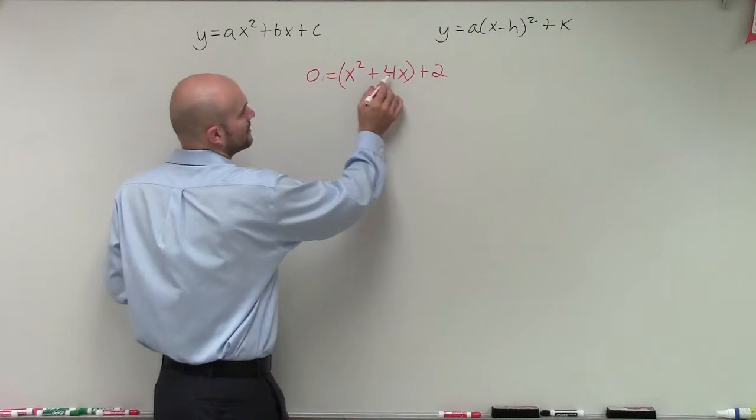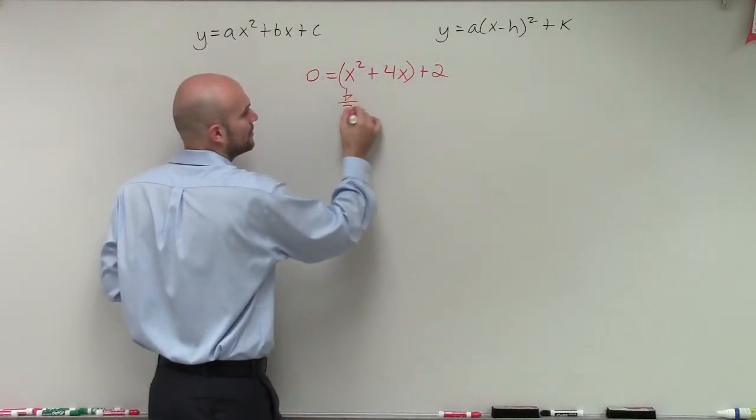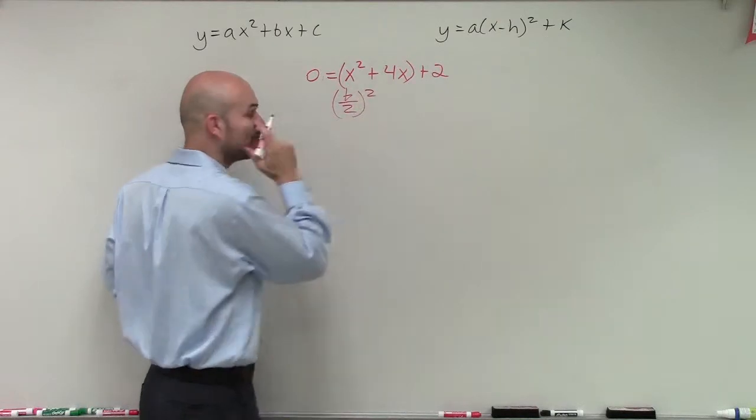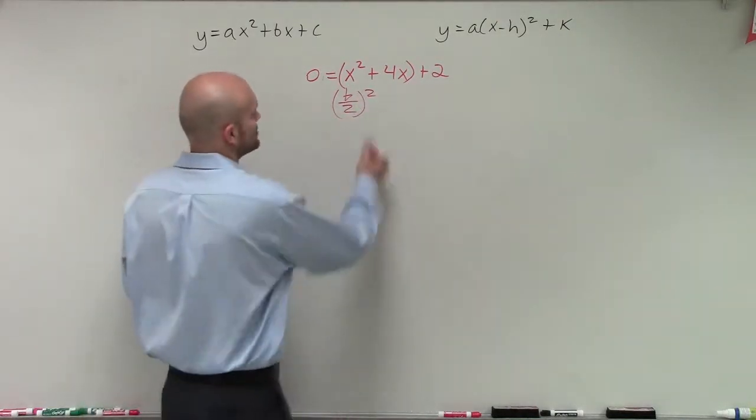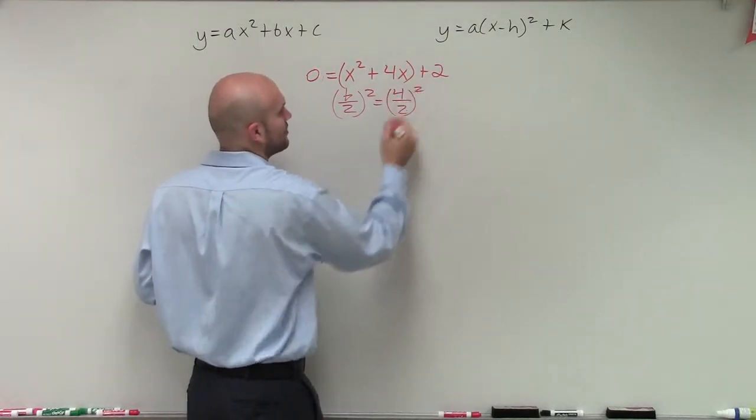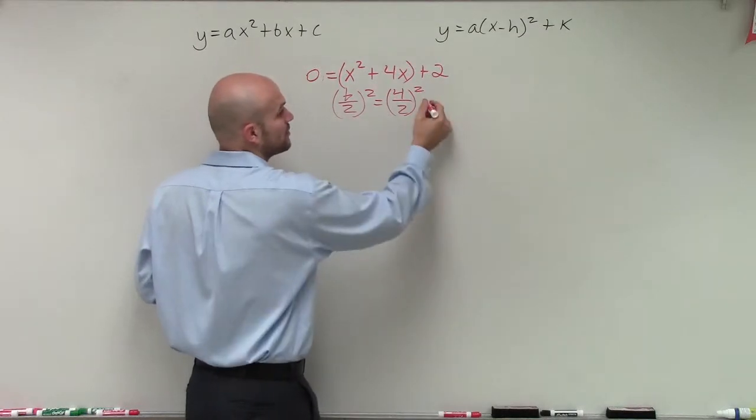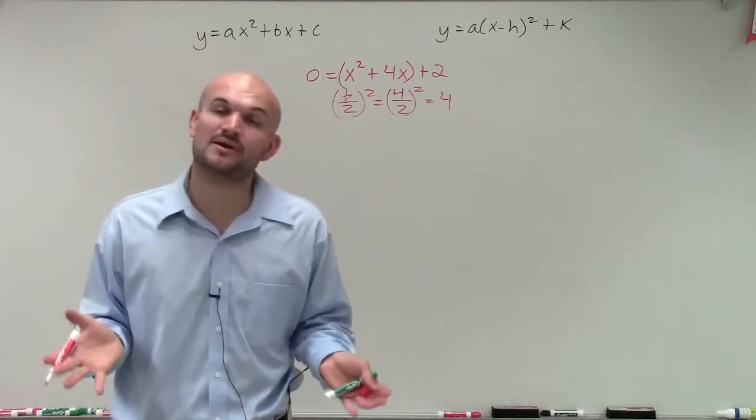I need to create a constant inside this parentheses that is going to be a square number. And to do that, I'm going to take my middle term b, divide it by 2, and then square it. And that's going to produce my square number that will produce a perfect square trinomial. So in this case, my b divided by 2. So b is 4 divided by 2 squared. Well, 4 divided by 2 is 2. 2 squared is equal to 4. So therefore, I'm going to add a 4 inside my parentheses.